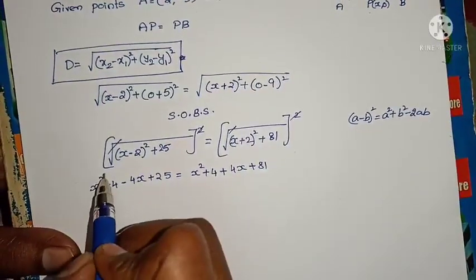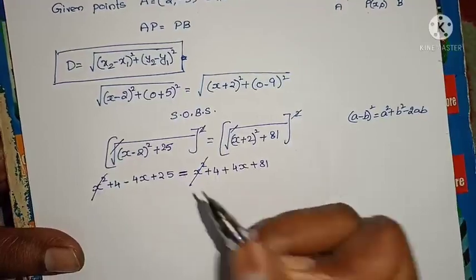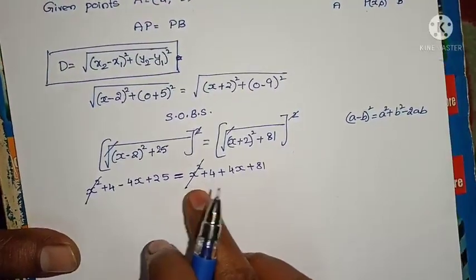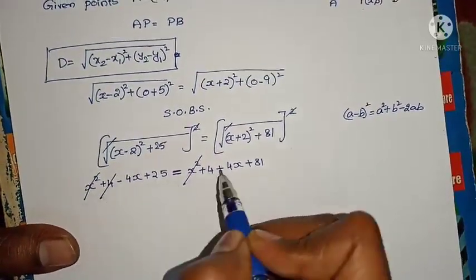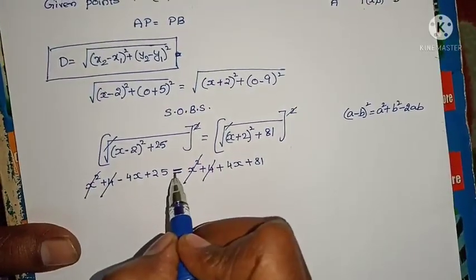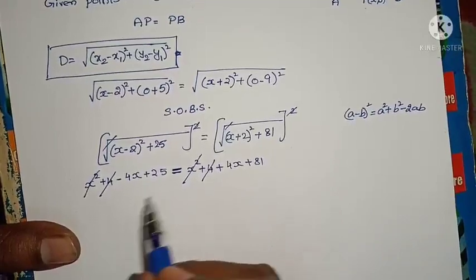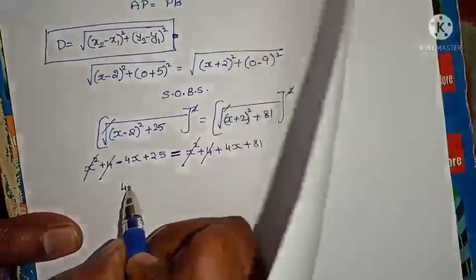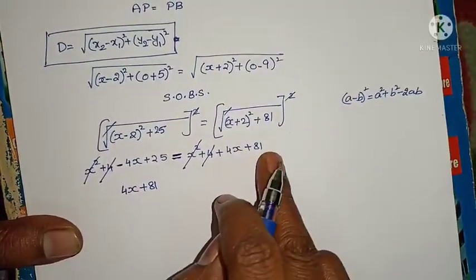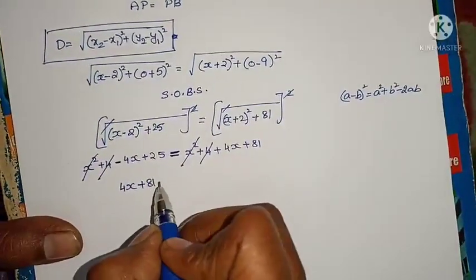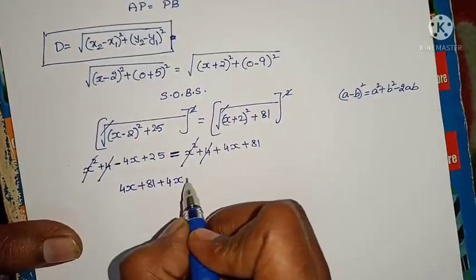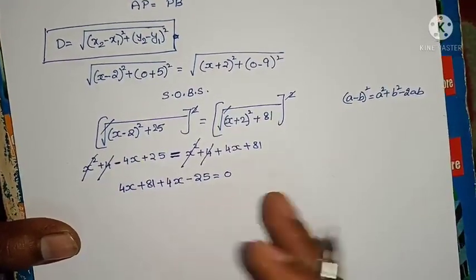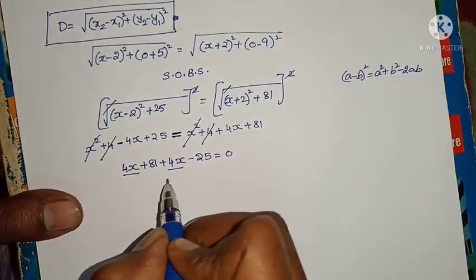See here — x squared and x squared are on opposite sides of equals, so they cancel. Plus 4 and plus 4 cancel. Now minus 4x is there — send it to that side. Plus 81 is there, and sending minus 4x gives plus 4x. If I send plus 25 to this side it becomes minus 25 equals 0. Now 4x plus 4x gives 8x.